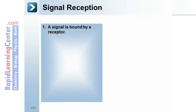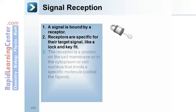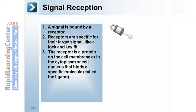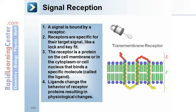A signal is bound by a receptor. Receptors are specific for their target signal, like a lock and key fit. The receptor is a protein on the cell membrane, or in the cytoplasm or cell nucleus, that binds a specific molecule called the ligand. Ligands change the behavior of receptor proteins, resulting in physiological changes.